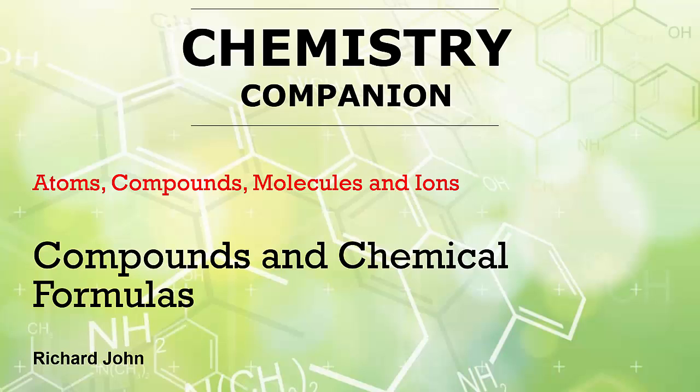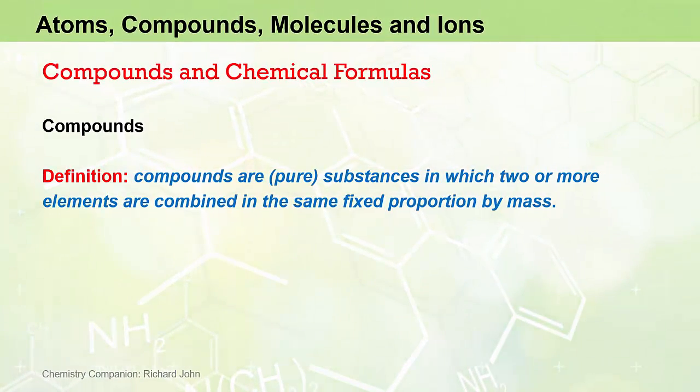In this video, we look at how atoms and elements combine to form compounds and how we represent these compounds using chemical formulas. You'll recall that a compound is a substance in which two or more elements are combined in the same fixed proportion by mass.